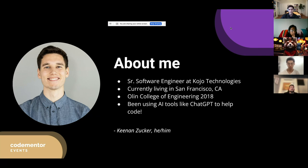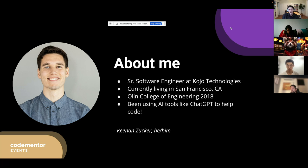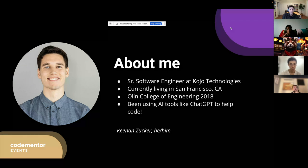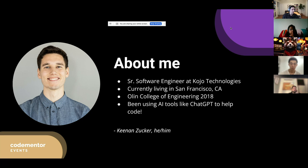My name is Kenan. I use he/him pronouns. I'm currently a software engineer at a startup called Kojo Technologies — we're in the construction software space. I'm currently living in San Francisco. In the past couple of months, like a lot of you, I've been really excited with some of the new AI tools — both excited and maybe slightly nervous — like ChatGPT. I've been using it to see how it can assist my job as a software engineer.